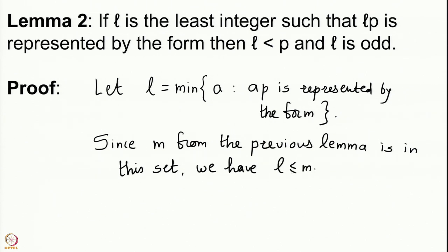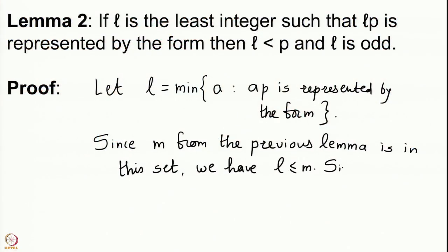Since m from the previous lemma is in the set of valid integers, we have l ≤ m, because we are taking the minimum of all integers whose multiples by p are represented by this form. It may happen that l equals m, or l might be less than m. In any case, l ≤ m and we have already proved that m < p, so l < p. We now want to prove that l is odd.